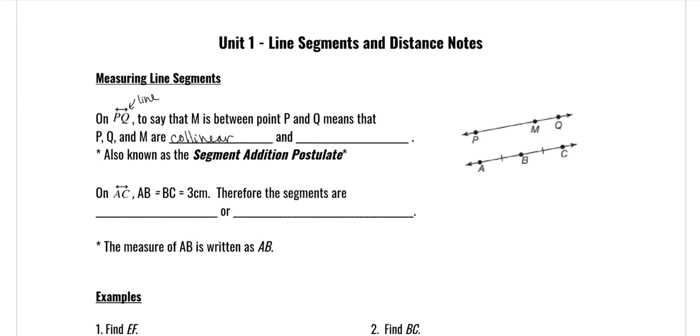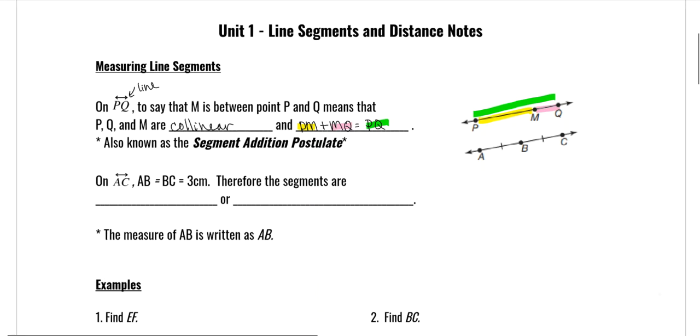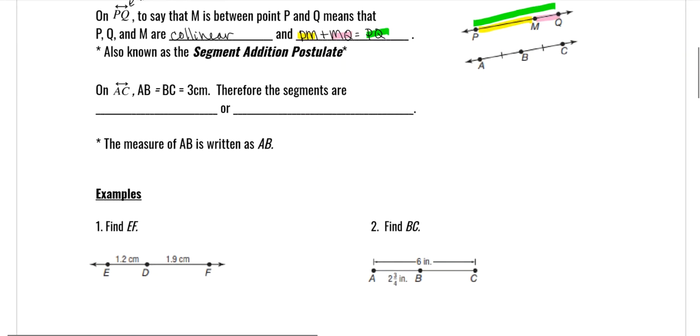So that means that PM plus MQ is equal to PQ. In other words, PM is this half plus this half, or part, not necessarily half, is equal to the whole thing. So it kind of makes sense. And this is also known as the segment addition postulate. So you add the two mini segments together, and it gives you the whole segment.